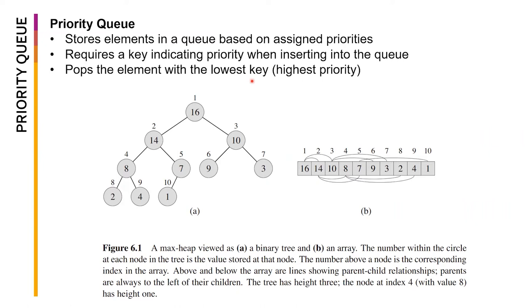A priority queue is basically a queue, but the one that goes out first is defined by the priority or the rank of that specific element. Priority queues store elements based on assigned priorities — it's not about whichever comes in first, it's about the priority of that element. It requires a key which indicates the priority when inserting an element, and it pops the element with the lowest key or the highest priority.